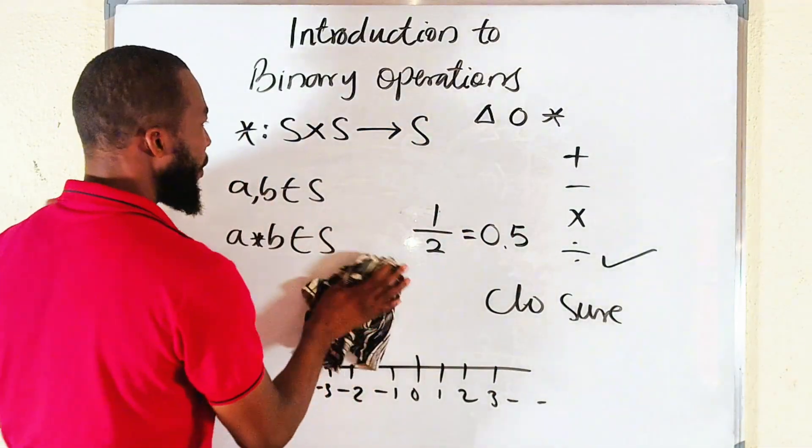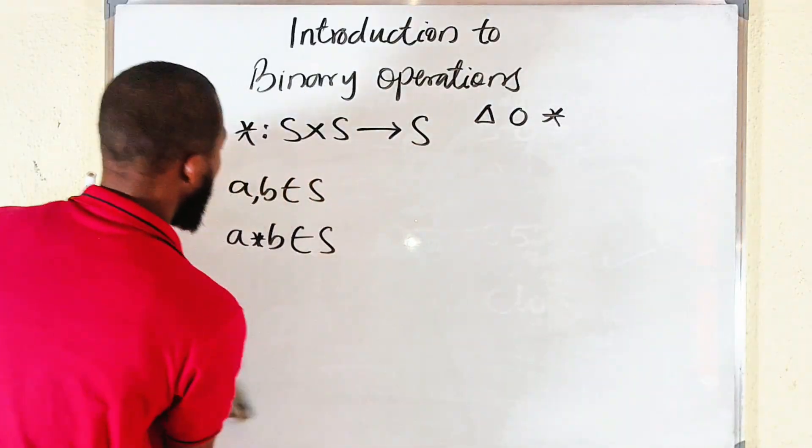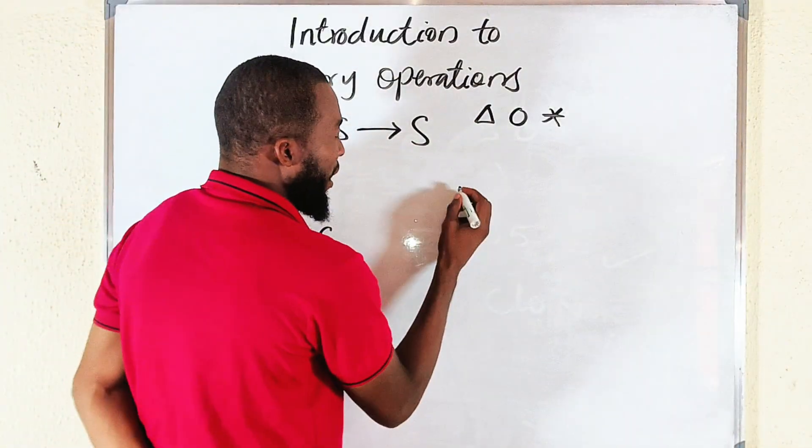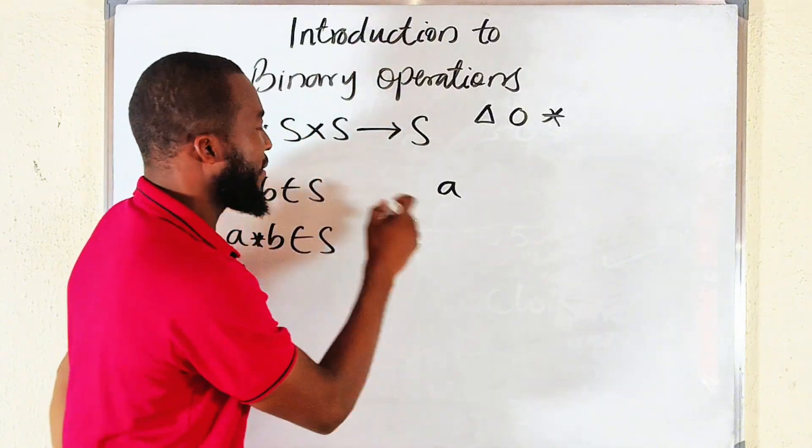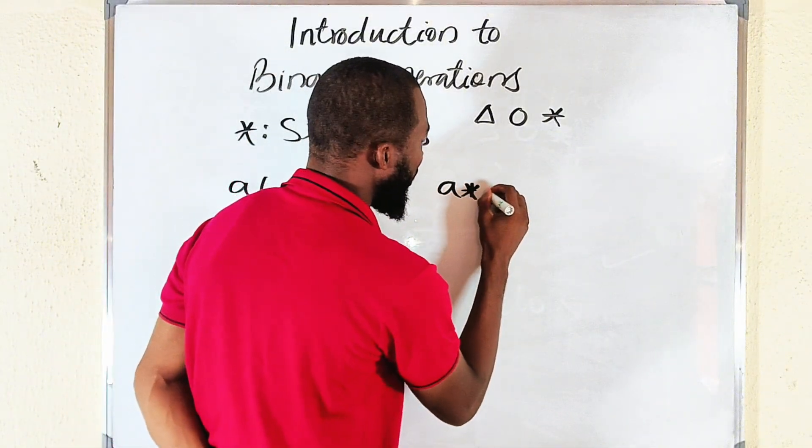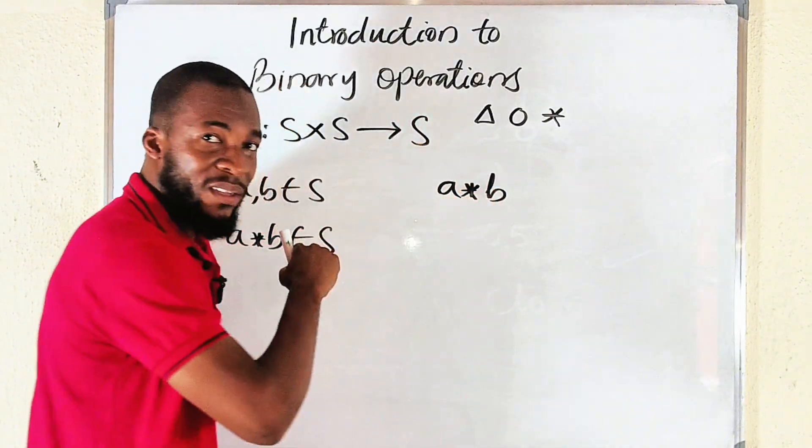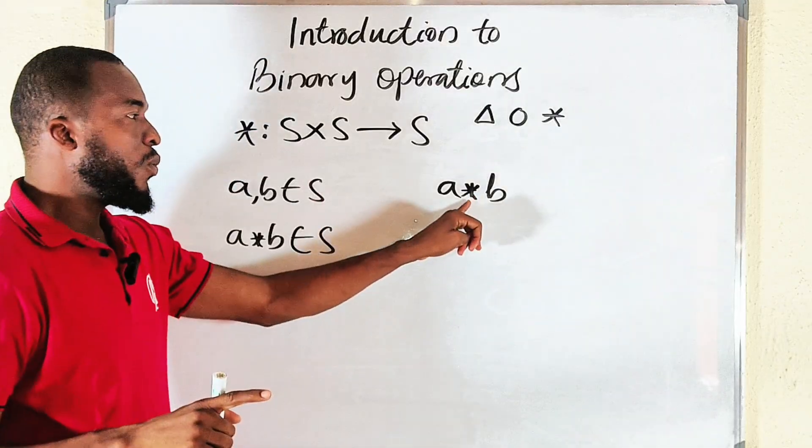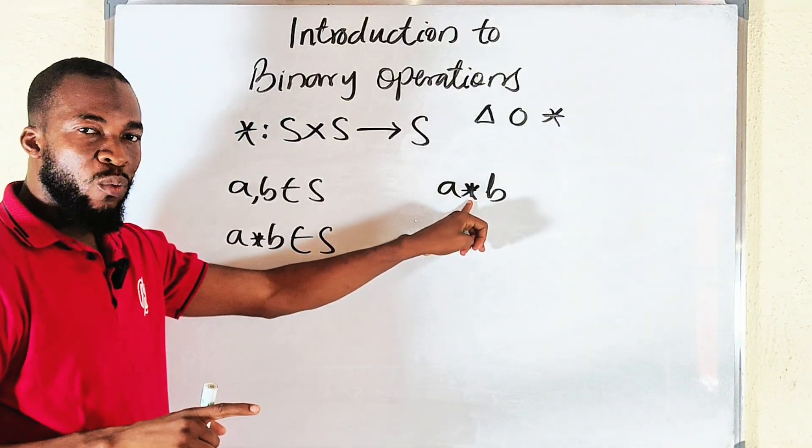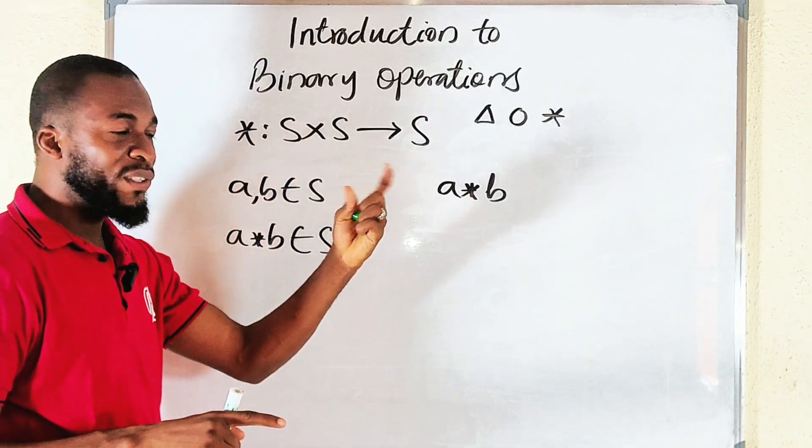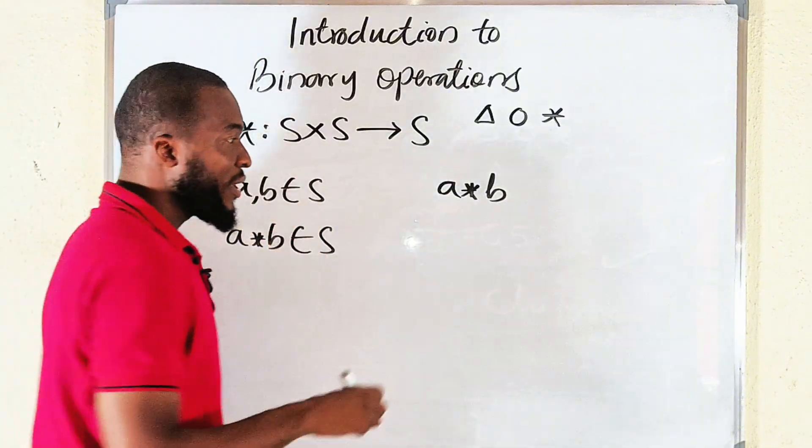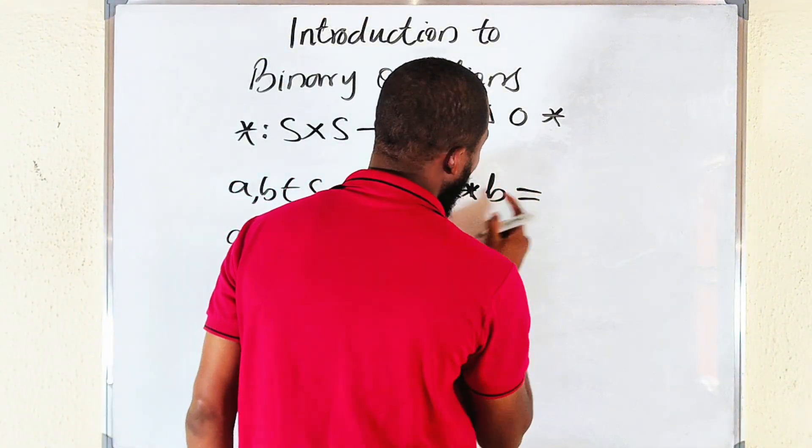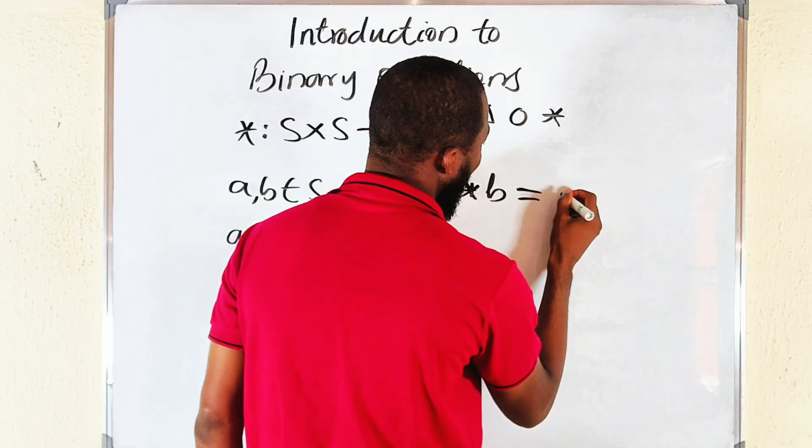So whenever you are given any of this, they have to be defined. For example, we are coming to that. If you take a number, maybe a, from the set S and relate it with another element within the set, you know we are not used to star. We are only used to plus, minus, division, multiplication.